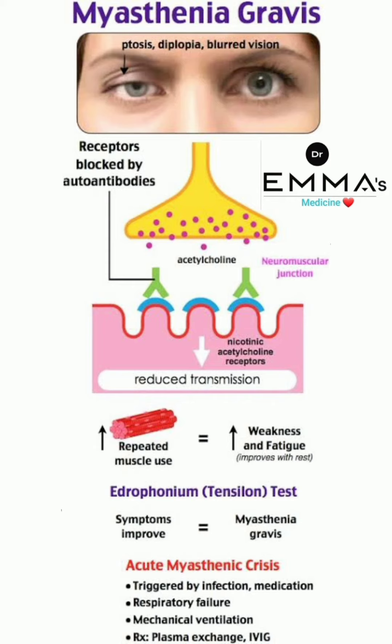Myasthenia gravis patients actually feel good when they wake from sleep, but with day progression they feel increasing fatigue. For investigation and diagnosis, the edrophonium (Tensilon) test is used: if symptoms improve with edrophonium, it is equal to a diagnosis of myasthenia gravis.